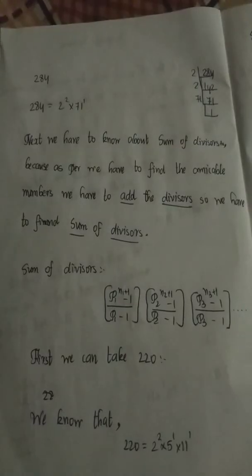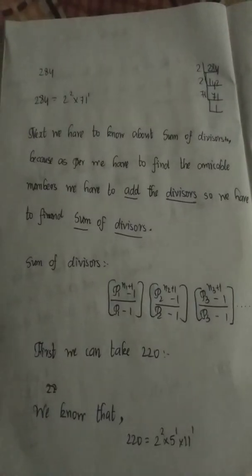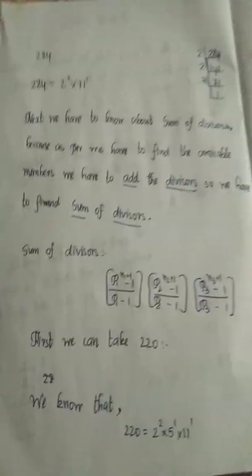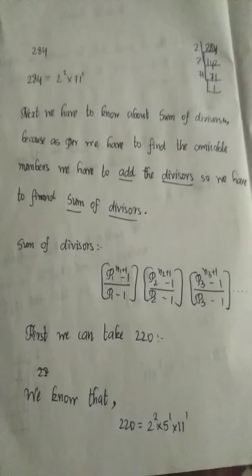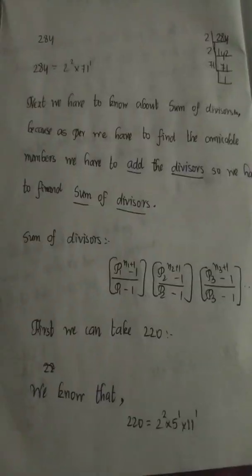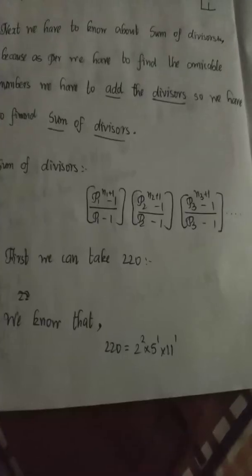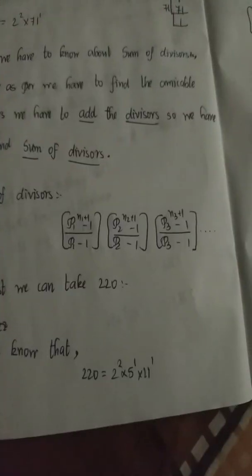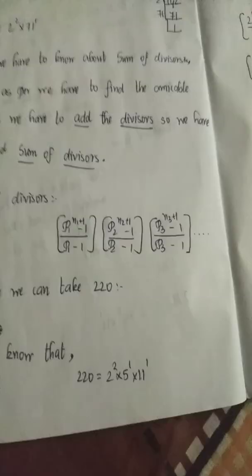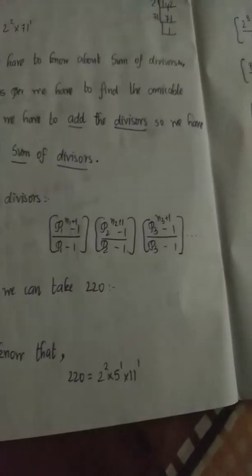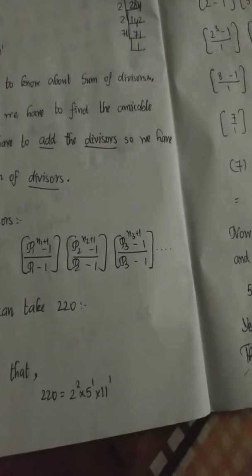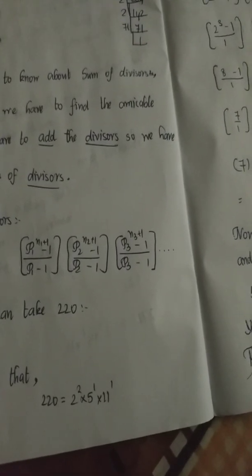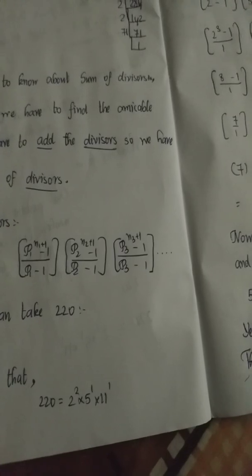Next we have to find the sum of the divisors, because to find amicable numbers we have to add the divisors. The formula for sum of divisors is: (p1^(n1+1) - 1) / (p1 - 1) into (p2^(n2+1) - 1) / (p2 - 1) into (p3^(n3+1) - 1) / (p3 - 1).